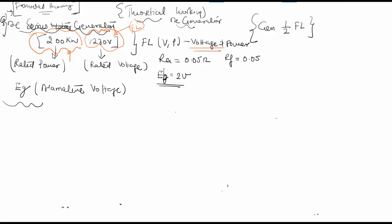The voltage and power rating are given. The resistance of the armature is 0.05 ohm, the resistance of the field is 0.05 ohm, and the brush contact drop is 2 volts. The question is to find the armature voltage.